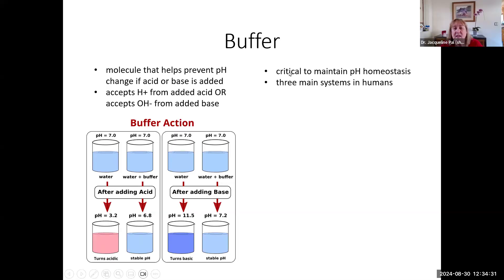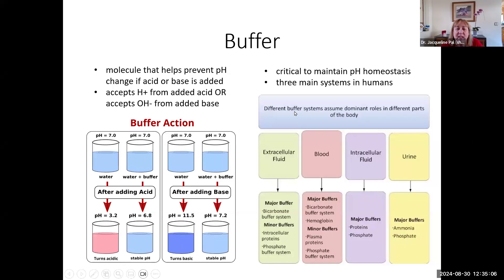So in humans, it's critical to maintain our pH homeostasis. We have a very narrow range of pH. By the way, our normal pH is not 7.0. If our pH is 7.0, we're probably dead. We'll talk a little bit later in the course about our normal pH and that normal range. We have three main systems that keep our pH in homeostasis. In this course, you don't really have to learn about them, but what I want you to understand is we have different buffer systems that work in different parts of our body.